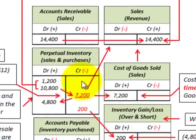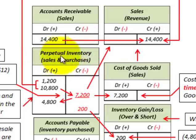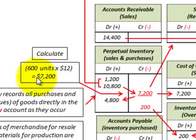The next thing we have to do with our perpetual system is determine the cost of goods sold — the inventory cost associated with those sales of $14,400. We had 600 units sold at a cost of $12 per unit, so our inventory cost for those sales was $7,200.